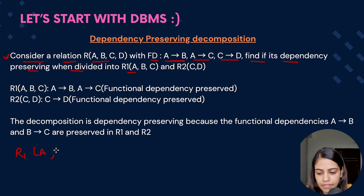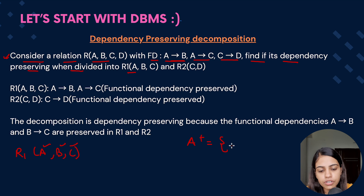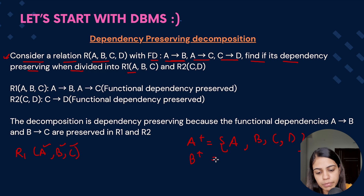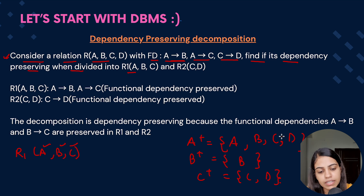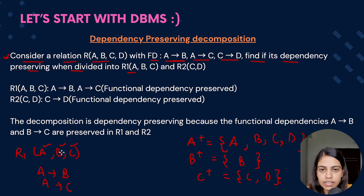Coming to R1, which has attributes A, B, and C. We take the closure of A: it gives A, B, C, and D — all attributes. The closure of B gives only B. The closure of C gives C and D. From A's closure, A can determine A, B, C, and D, so we derive A→B and A→C. B can only determine itself, so we discard it. C can determine D, but D is not present in this relation.